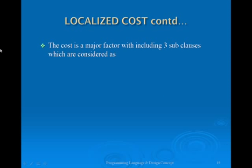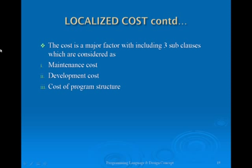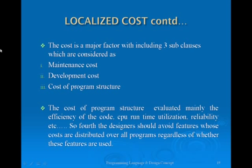Cost is a major factor, including three sub-clauses: maintenance cost, development cost, and cost of program structure. The cost of program structure evaluates mainly the efficiency of the code, CPU runtime utilization, reliability, and so on.